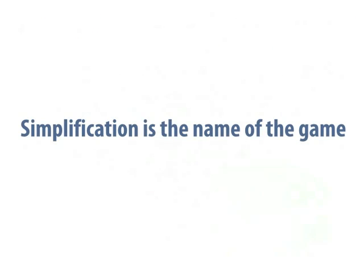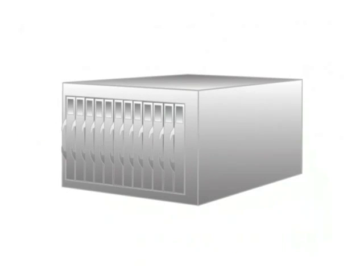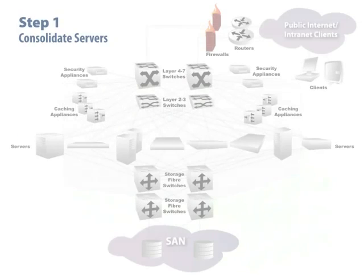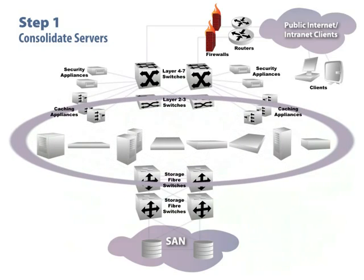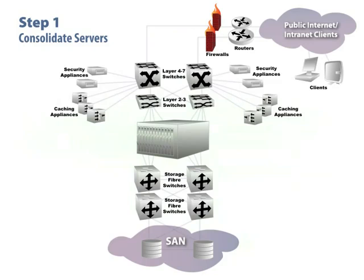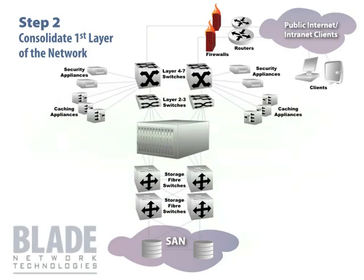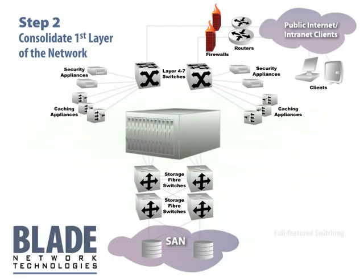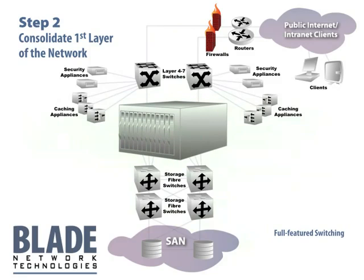Simplification is the name of the game. Smart companies around the world are turning to blade servers as a solution to these challenges. Consolidating a large number of systems into a blade server form factor is the first step in the effort to simplify the data center. With blade networking options, you can take server consolidation one step further by simplifying the network. Blade server switches provide sophisticated network switching inside the blade server chassis to improve reliability and simplify management at a fraction of the cost of external switches.